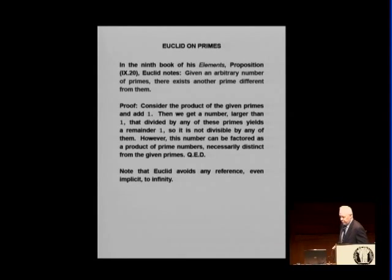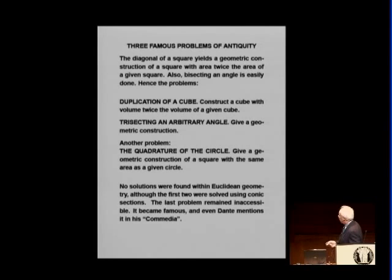The diagonal gives you a square with area twice the area of a given square. And you can construct that using the straight edge and compass. And so, the problem came out to do it for a cube. So, we have duplication of a cube. Construct a cube with volume twice the volume of a given cube.